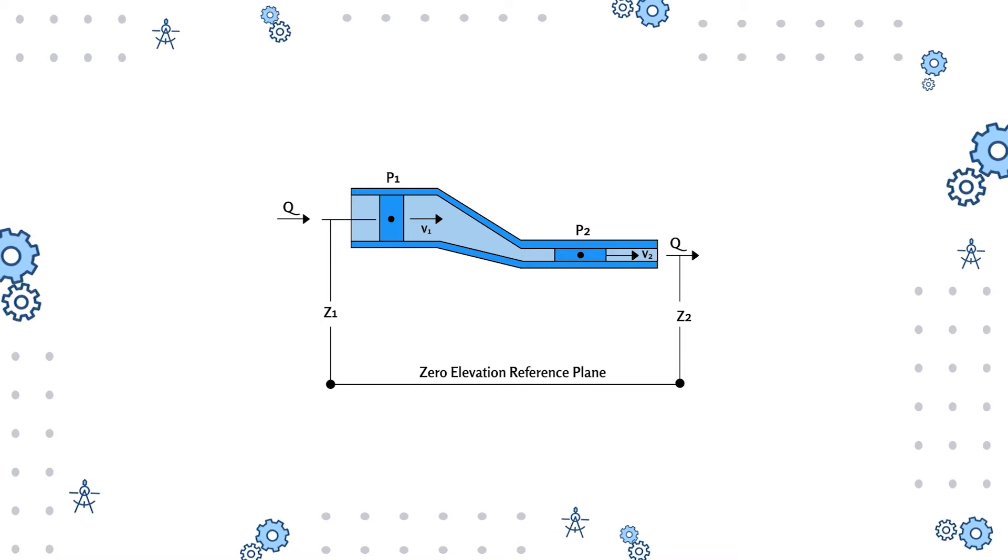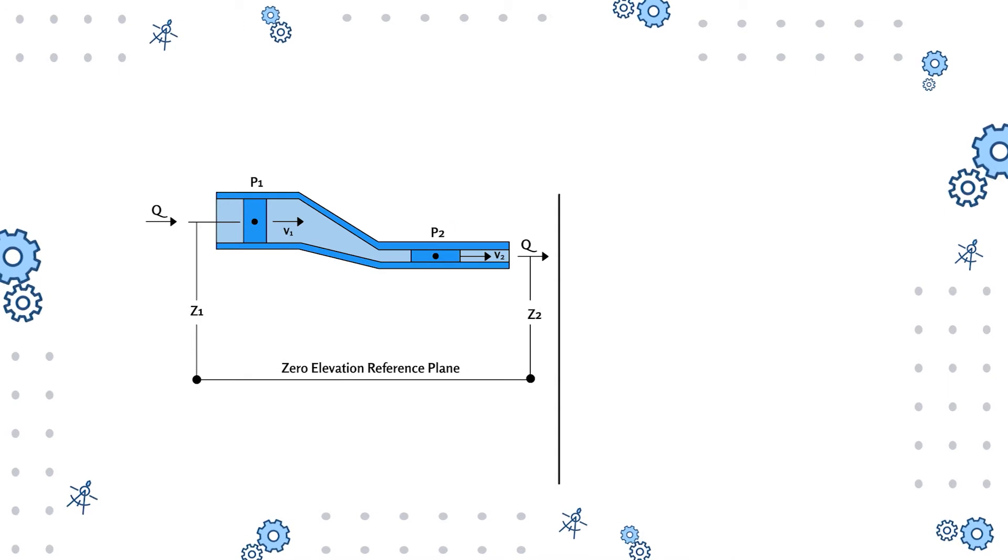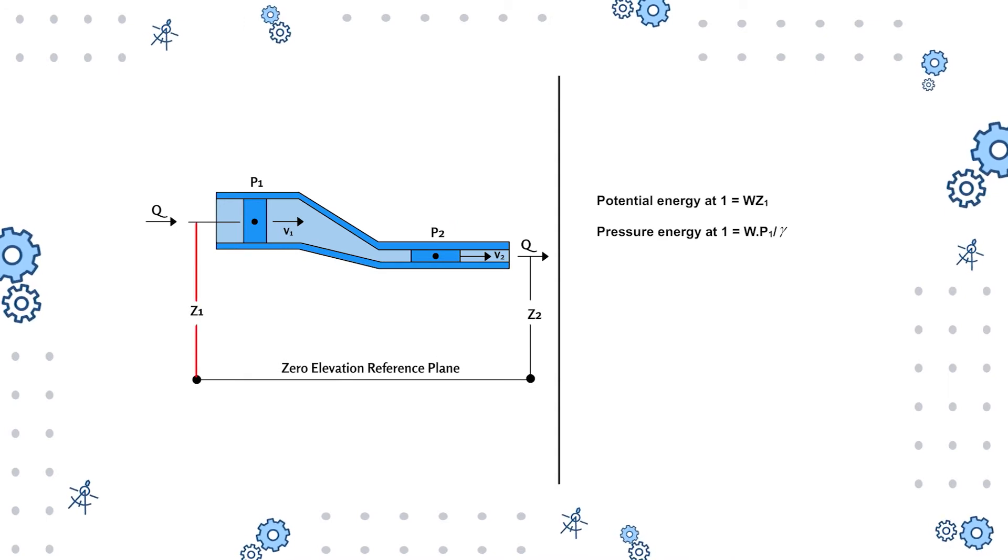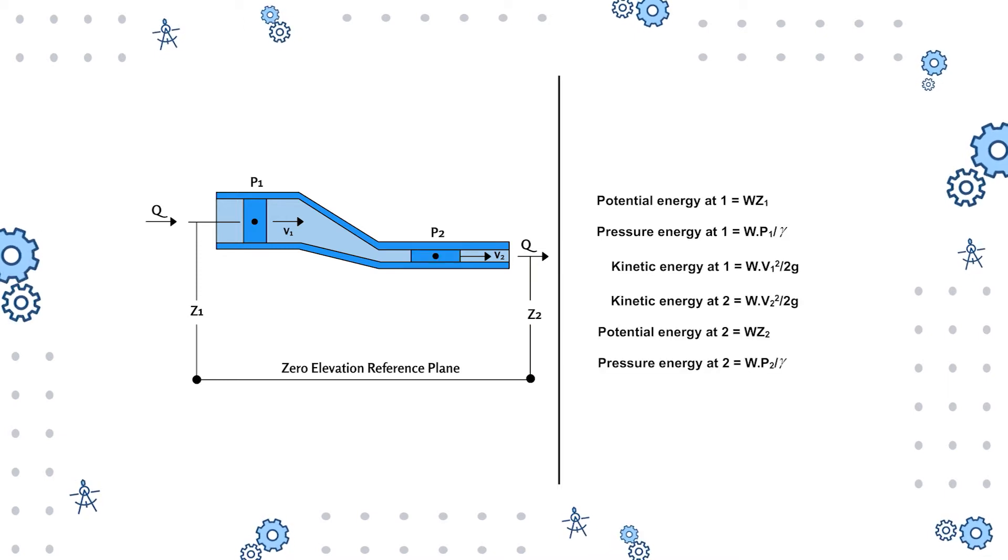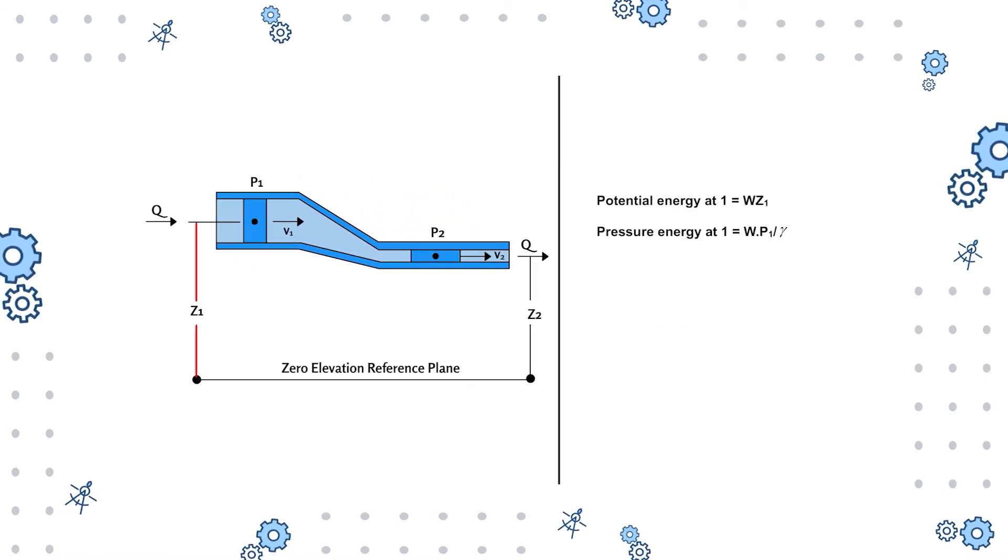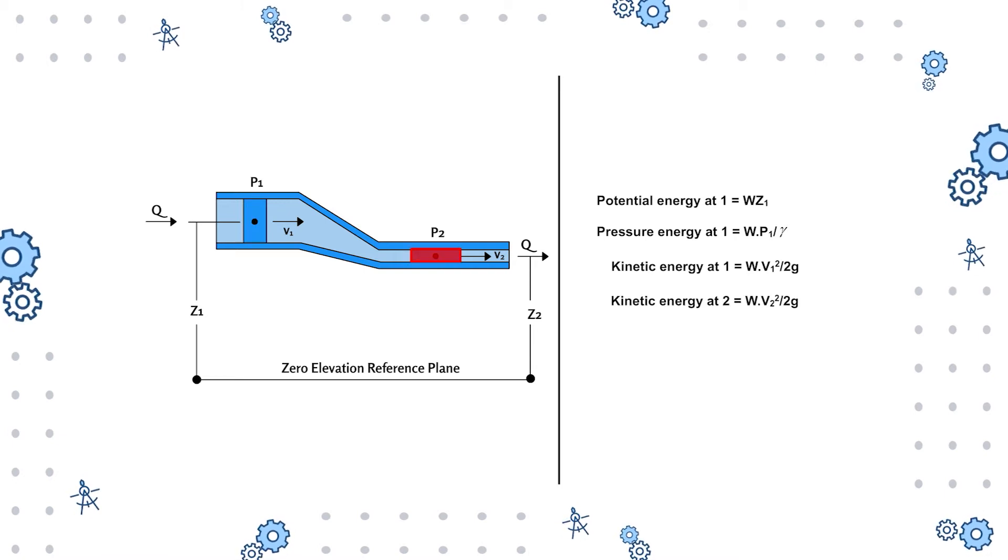To understand this, a fluid flowing through a pipe of varying cross-section is observed. Since point one is at a higher elevation, therefore the potential energy of the fluid at point one is higher. At the same time, since the area of cross-section is large, the velocity is reduced. Now as the fluid flows through a smaller area at point two, this velocity is increased but potential energy is decreased due to lower elevation.